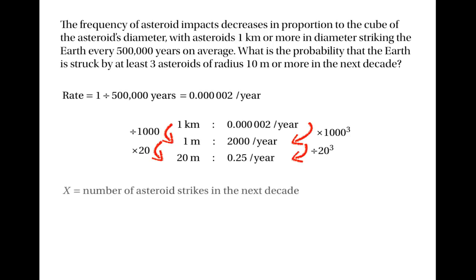Let's say that x is the number of asteroid strikes in the next decade. Then lambda will be 2.5, because if we expect 0.25 strikes per year, then in 10 years we expect 2.5 strikes. So x will have the Poisson distribution with parameter 2.5.